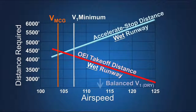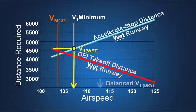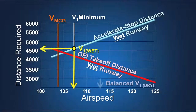The ability to reduce V1 speed can be limited by VMCG speed and the lowest permissible V1 speed in relation to this ground minimum control speed. When V1 speed is limited by VMCG speed, the takeoff on a wet runway will be accelerate stop limited.